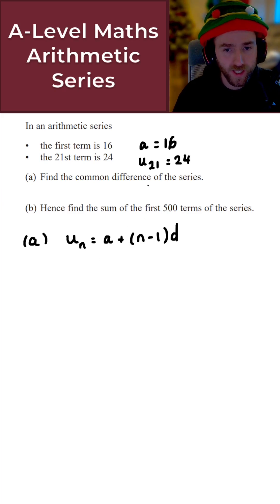I know a here, I know what n is, that is 21, so let's just put all of that together and find the common difference of the series. So u₂₁ here is equal to a which is 16 plus then 21 minus 1, so that's 20 times by d, and u₂₁ here is equal to 24.